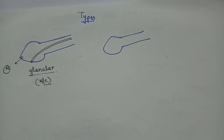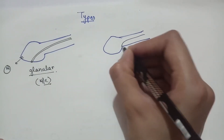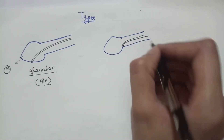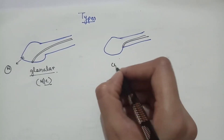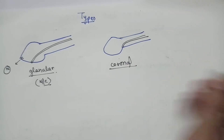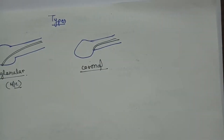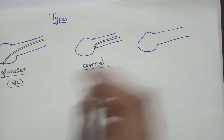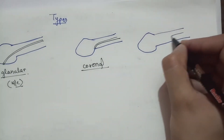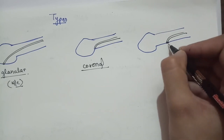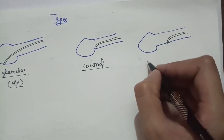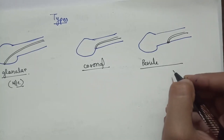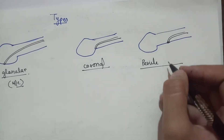The second type is when the urethra opens at the junction of the glans penis and the shaft of the penis — this is known as the coronal type. The third type is when the urethra opens at the shaft of the penis — this is the penile or penoscrotal type.